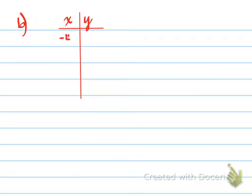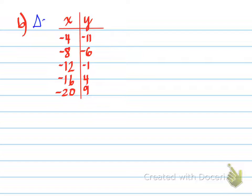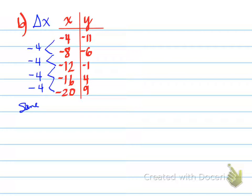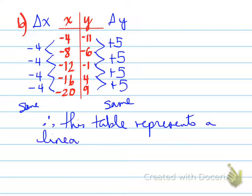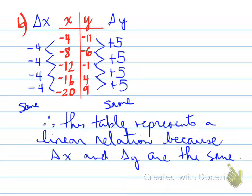Looking at another table: always compute delta x first. Here it goes down 4 each time, so the values are the same. If they weren't the same you'd say 'unable to determine.' Since they are the same, we move to delta y and find the change in the y's: plus 5, plus 5, plus 5, plus 5 — all the way across. Delta x values are the same and delta y values are the same, so this table represents a linear function.